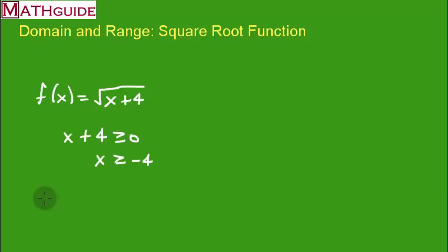So imagine you have all the numbers representing all real numbers. Here's negative 4, it can be equal to negative 4, and it can even be greater than negative 4. So this is what my domain looks like. I could see right away that it has to be all the numbers that are greater than or equal to negative 4.